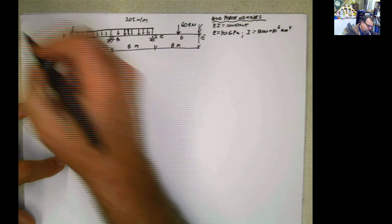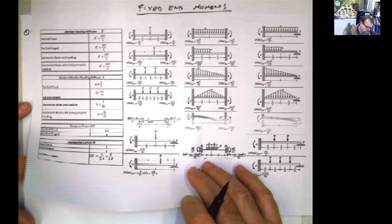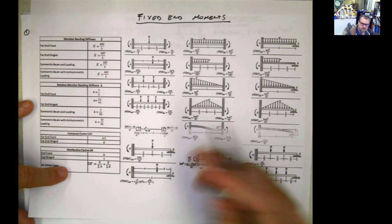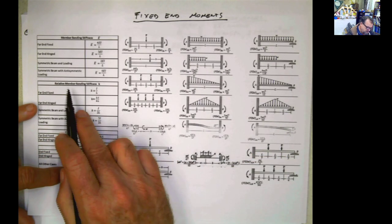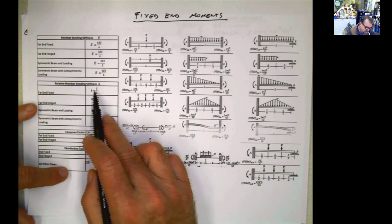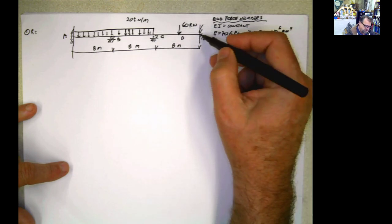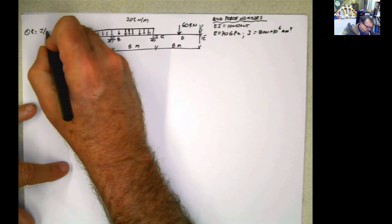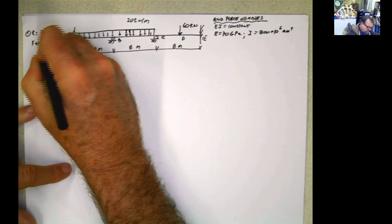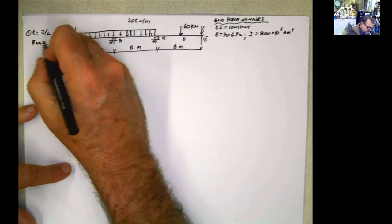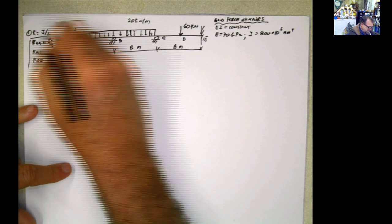The first step of moment distribution, step by step, is to calculate the member stiffness. I'm going to calculate the relative member stiffness. I posted a table in one of the previous problems, but in the back of the book you have similar tables. The relative member stiffness k for the far end fixed is i divided by l. This is continuous, can be considered like fixed, and this is fixed also. So all of them are going to be i over l. Because i is constant, I'm going to say 1 divided by l. So k_AB is going to be i divided by 8, and this is equal to k_BC and k_CE.